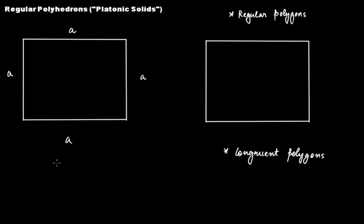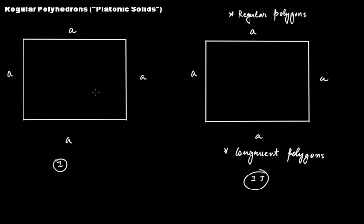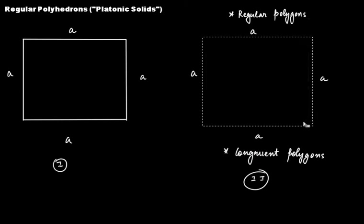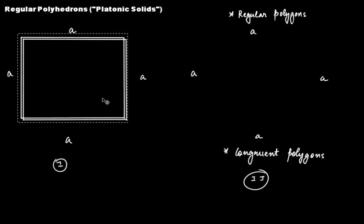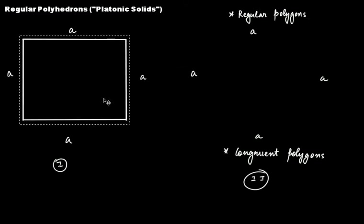Imagine that this is square 1 and this is square 2. Square 2 again has the same measurements: this side is A, that is A, this is A, this is A. The measurement of square 1 and square 2 are equal, which means these two squares are actually congruent. If you take square 2 and try to superimpose it on square 1, that makes them congruent polygons.